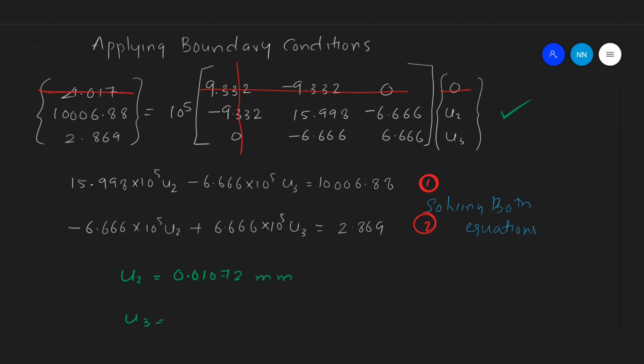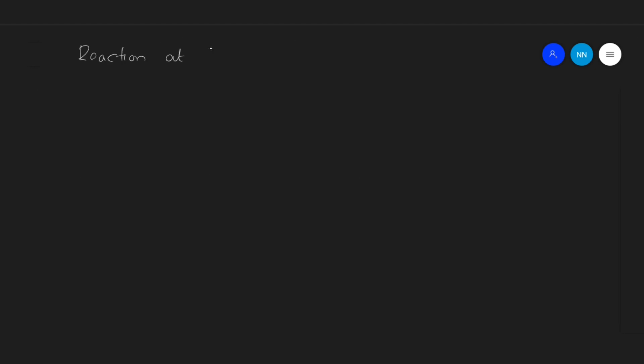Now let's find the reaction forces at every node. The reaction matrix is given by R = KU − F. Let's substitute the values.